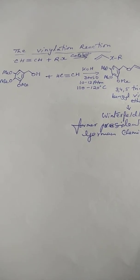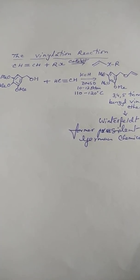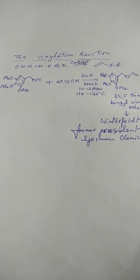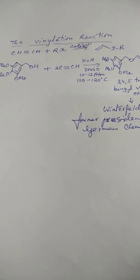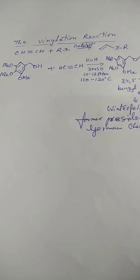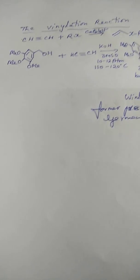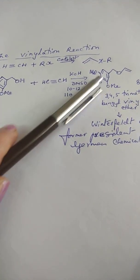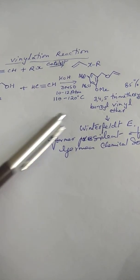One important reaction is the vinylation reaction. Acetylene together with RX — which can be ROH, RSH, acetoxy, or an acid halide — in the presence of a catalyst leads to the vinyl derivative, an addition reaction. One such application leads to the formation of trimethoxybenzyl vinyl ether: trimethoxybenzyl alcohol with acetylene gives 3,4,5-trimethoxybenzyl vinyl ether in about 85% yield, a very good reaction under these conditions.